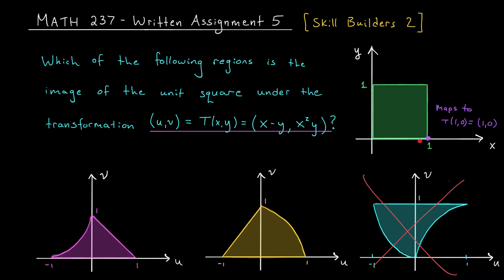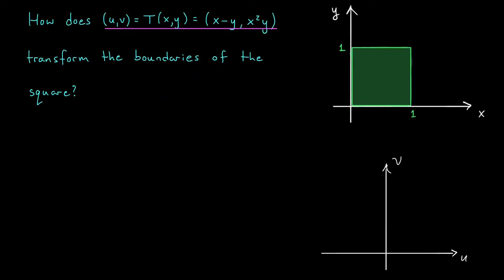You can see that the boundary of our square is made up of four straight line segments, which maybe I'll call 1, 2, 3, and how about 4. We want to describe these line segments using equations that we can feed to this function T. Then we're going to see what the output is in the uv plane.